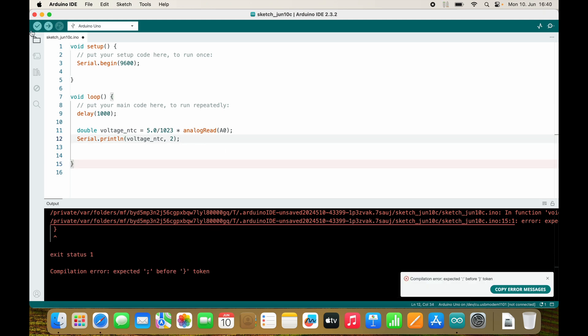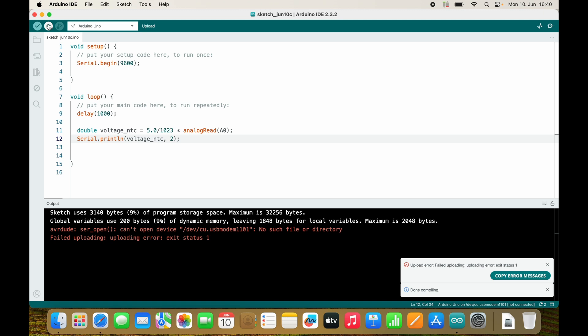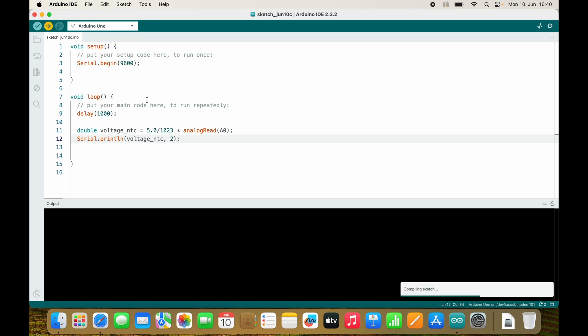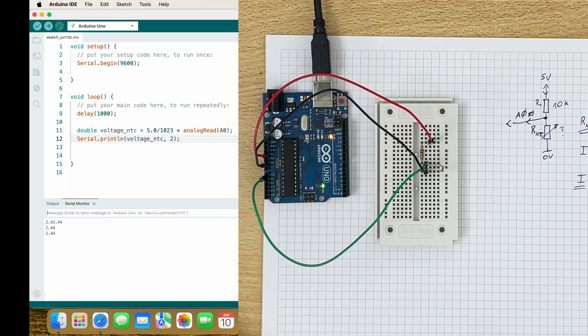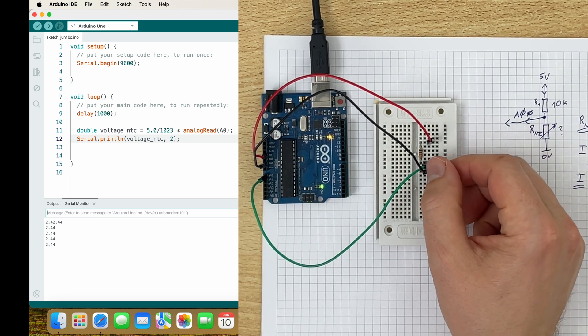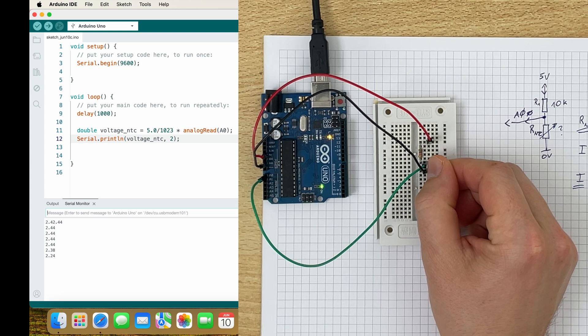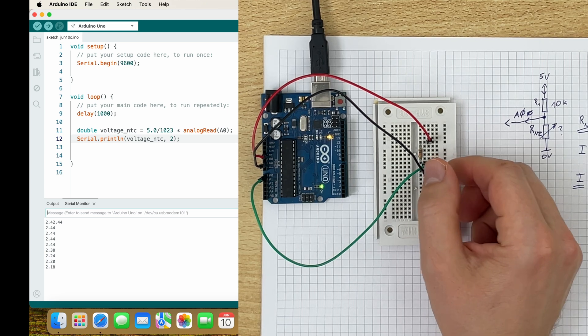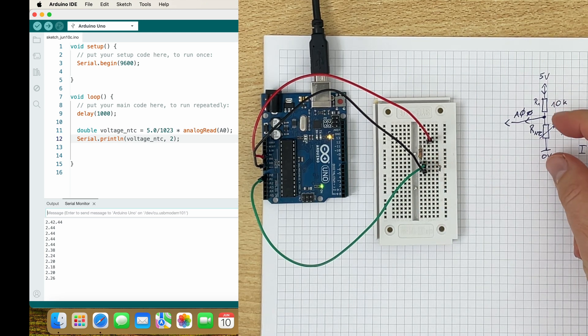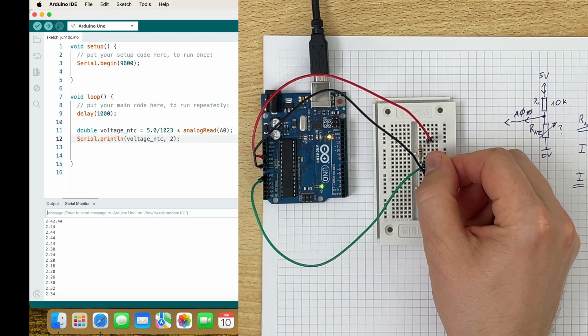And if I want to print a floating point variable, I can specify how many decimal places I would like to have. I'll go with two. Awesome, 2.44. And if it gets warmer, then the voltage drops because then the resistance of the NTC drops. This looks great.